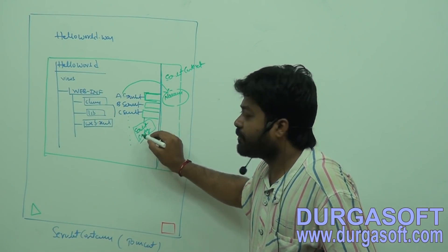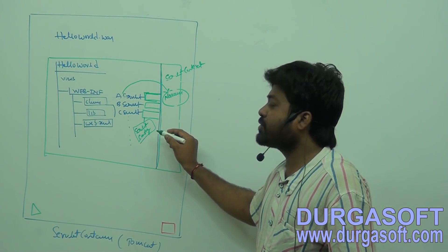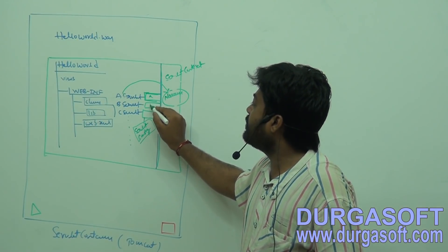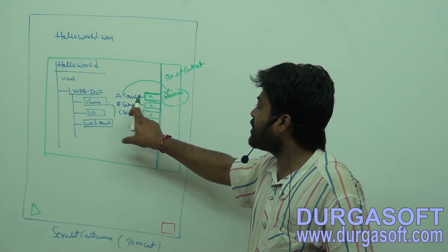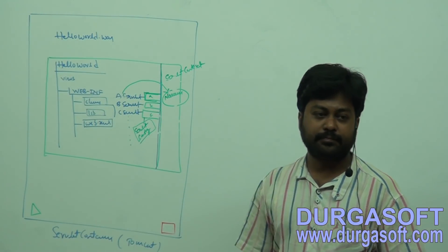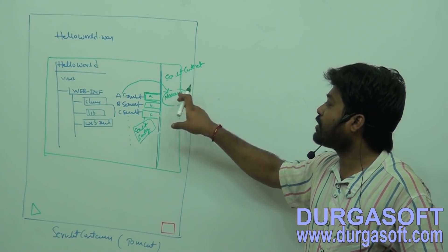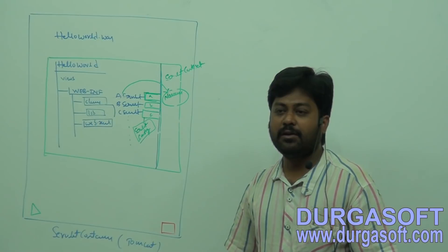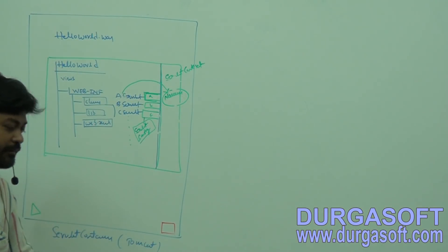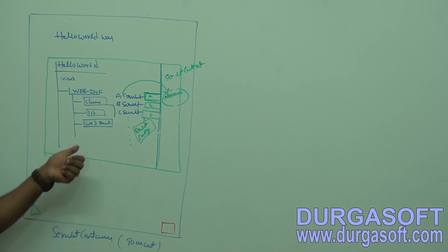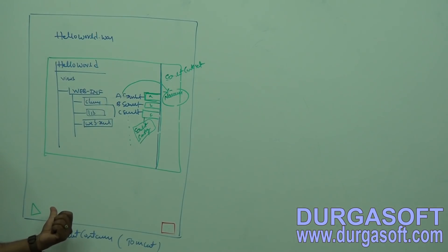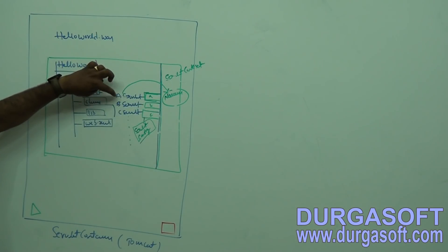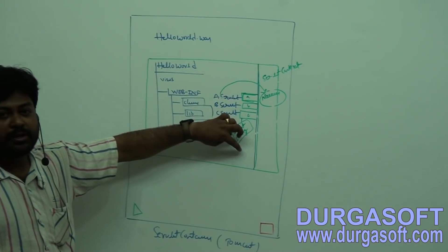If you want to put something private for your servlets, keep the data under ServletConfig. How many ServletConfig objects will it create? One per servlet. For each application, one ServletContext object; for each servlet, one ServletConfig object — these are maintained by your servlet container. When will it do this job? After reading the web.xml file — after reading your web.xml file, it will create one ServletContext object and for each servlet, one ServletConfig object.